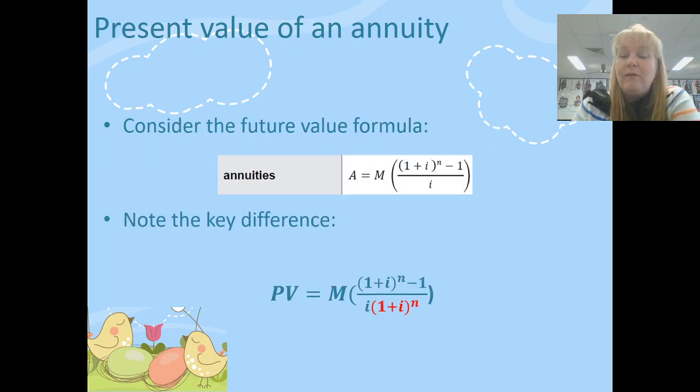Well, think about the formula that actually is on your QCAA formula sheet. It's the annuities one up the top and there's not a lot of difference between that formula and the present value formula. Obviously, the subject of both formulas is different. One's finding future value and the other's finding present value. The only other change is that the denominator for the present value formula has 1 plus i to the power of n multiplied by i on the denominator. So if you just remember that that's on the top and the bottom, then you'll be fine.